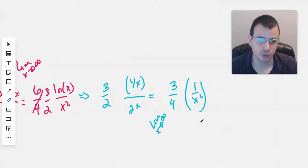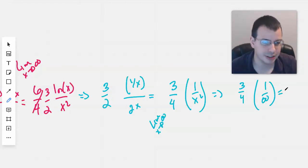We would get something along the lines of 3 fourths times 1 over infinity. You're not supposed to write that, but I just did. And that's okay. Which would give us 0.